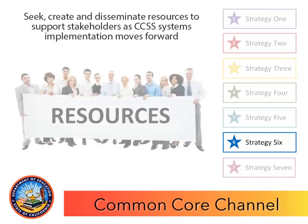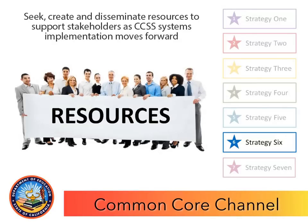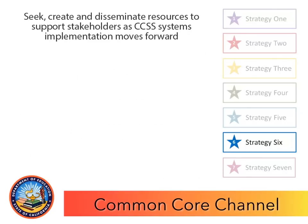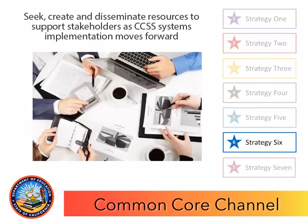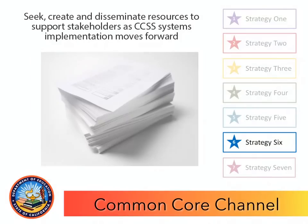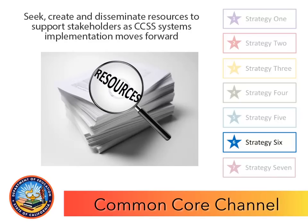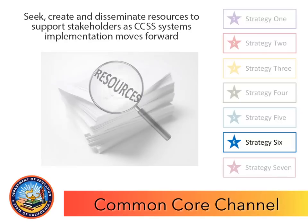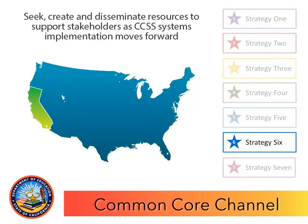Strategy six is to seek, create, and disseminate resources to support stakeholders as CCSS systems implementation moves forward. This strategy supports local implementation efforts by securing additional funding and resources. It also seeks to identify and share the best resources for implementing Common Core from around the state and nation.